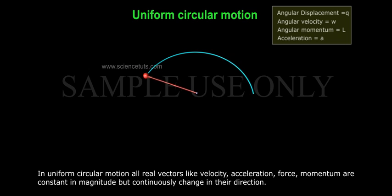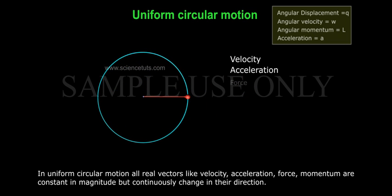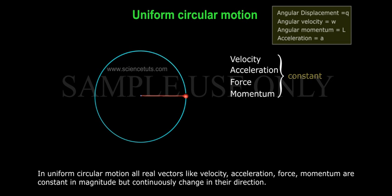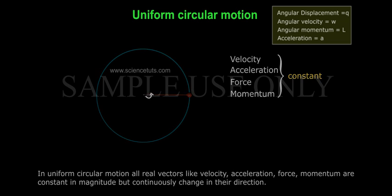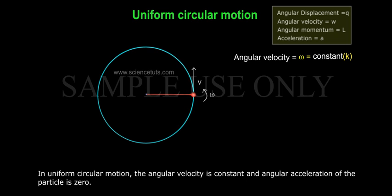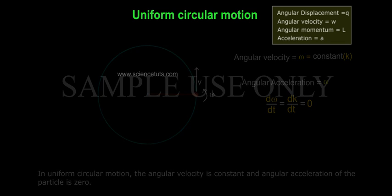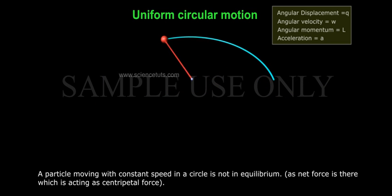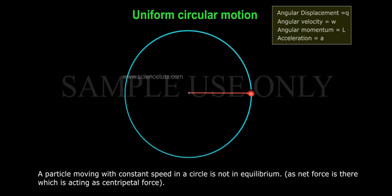In uniform circular motion, all real vectors like velocity, acceleration, force, and momentum are constant in magnitude but continuously change in their direction. The angular velocity is constant and angular acceleration of the particle is zero. A particle moving with constant speed in a circle is not in equilibrium, as there is a net force acting as centripetal force.